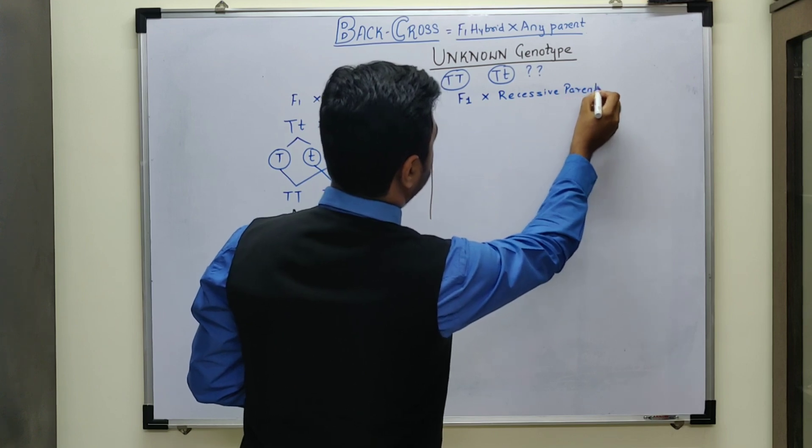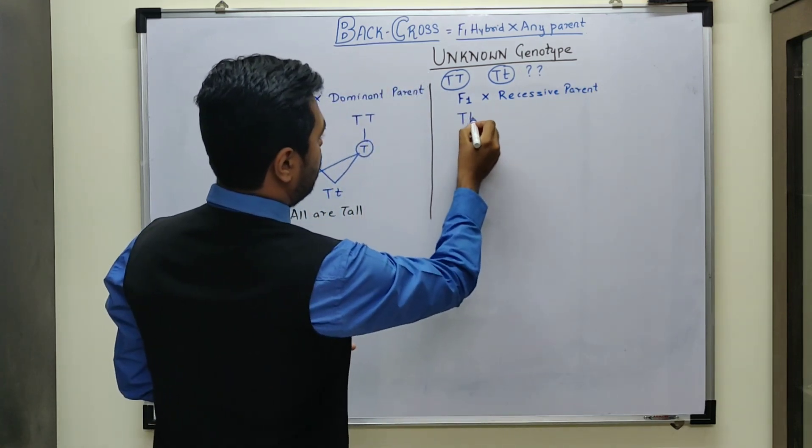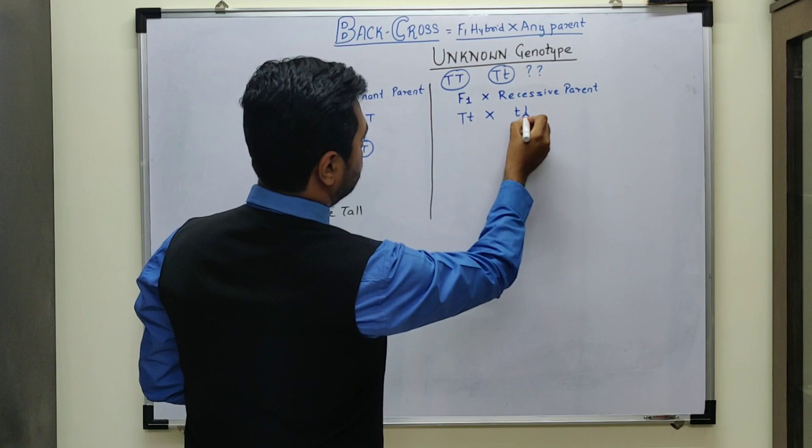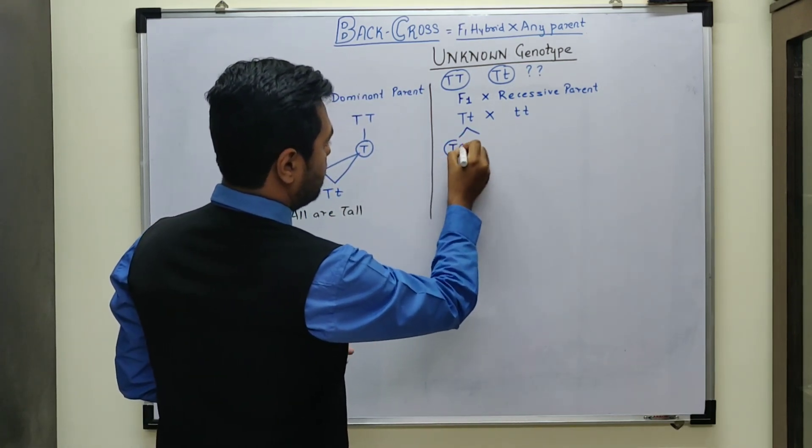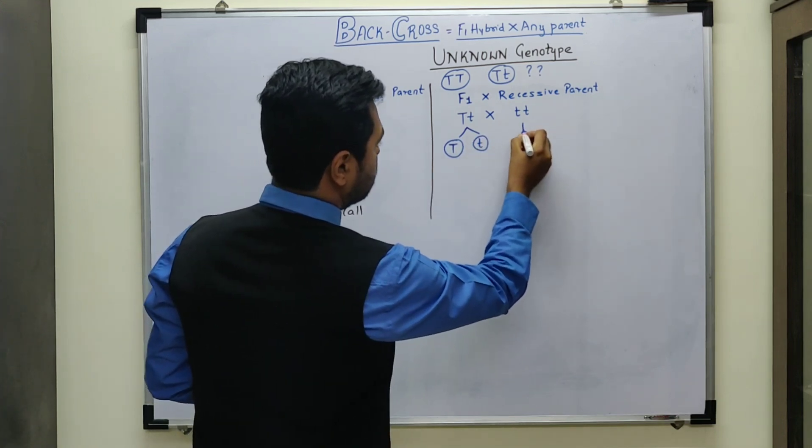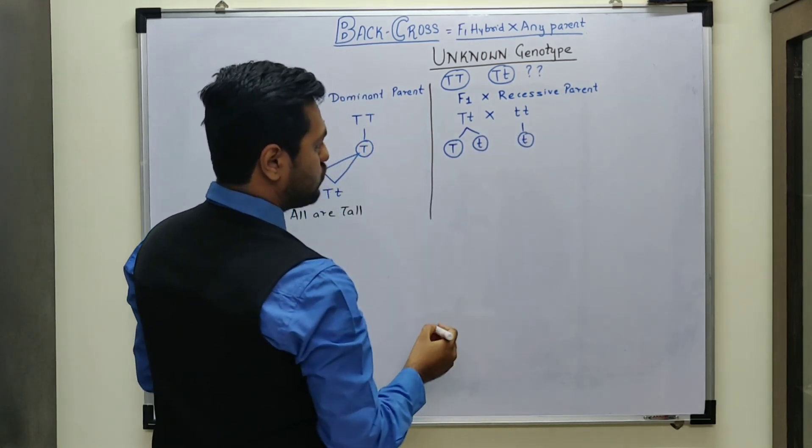F1 hybrid crossing with the recessive parent, that is capital T small t crossed with the recessive parent, small t small t, that is a dwarf plant. This is going to produce two types of gametes, that is capital T and small t. This is one type of gamete, that is small t.